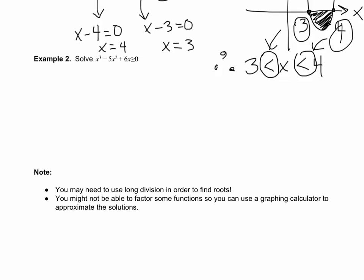Our second example: x³ - 5x² + 6x ≥ 0. We need to factor again to find the roots. If we factor out an x, then inside becomes x² - 5x + 6 ≥ 0. And then x² - 5x + 6 will factor to (x - 3)(x - 2) ≥ 0.